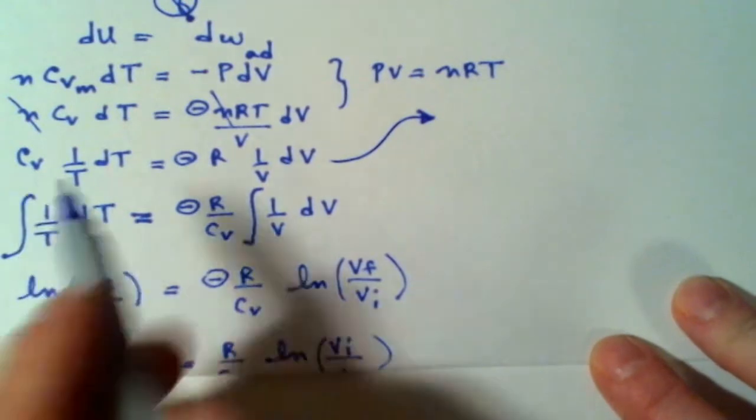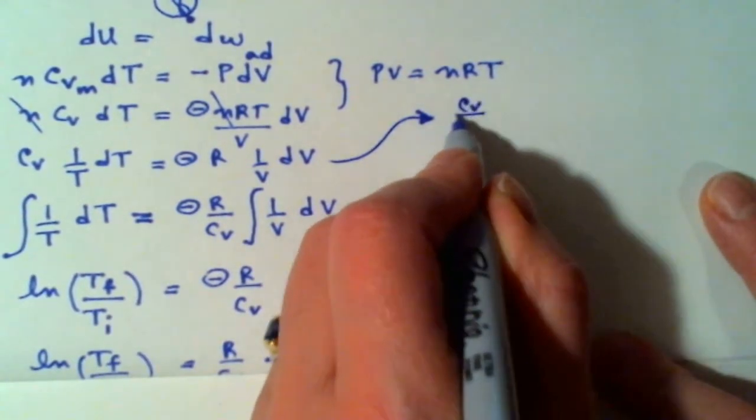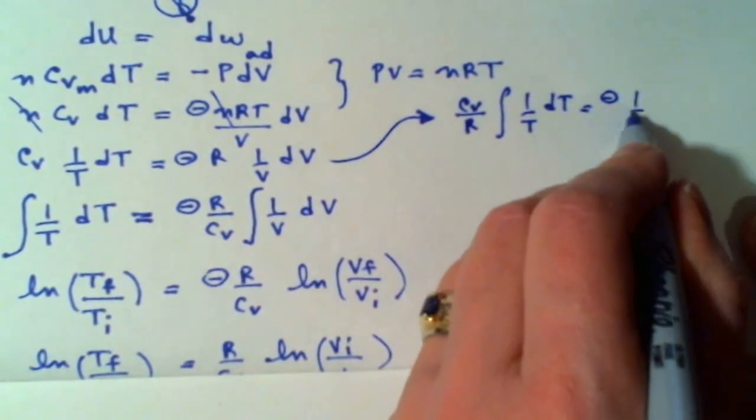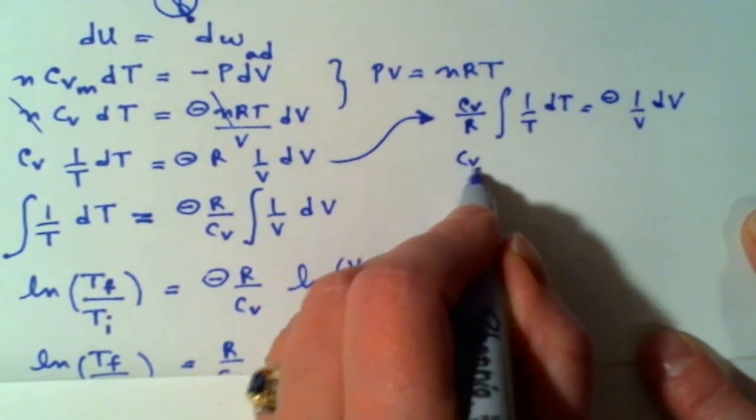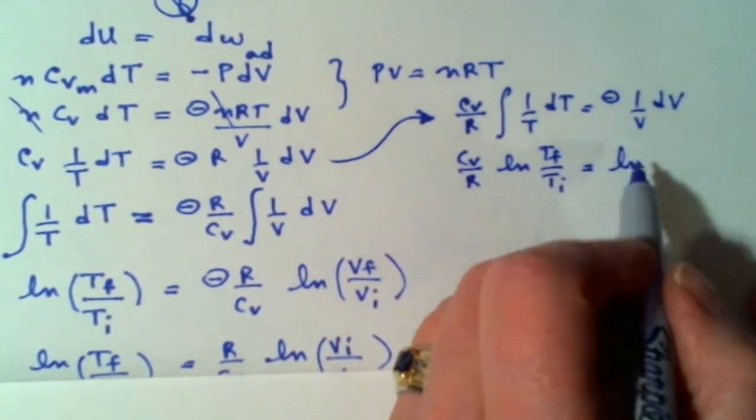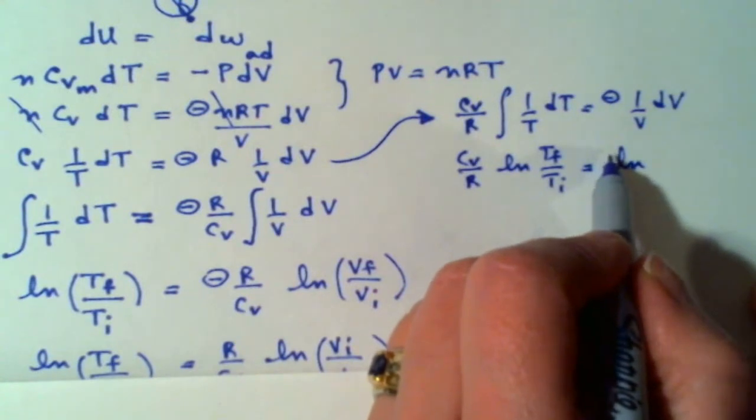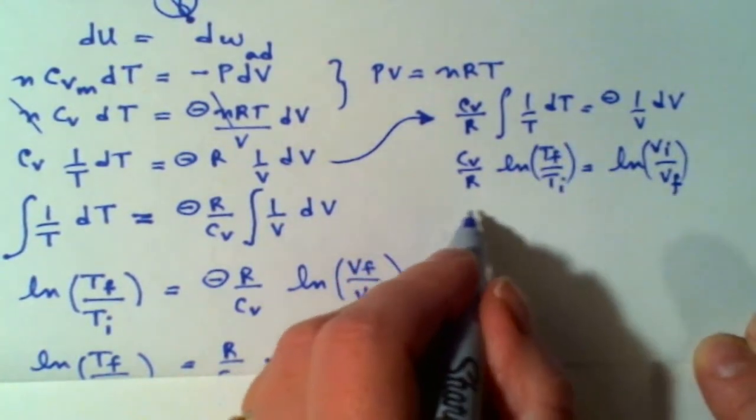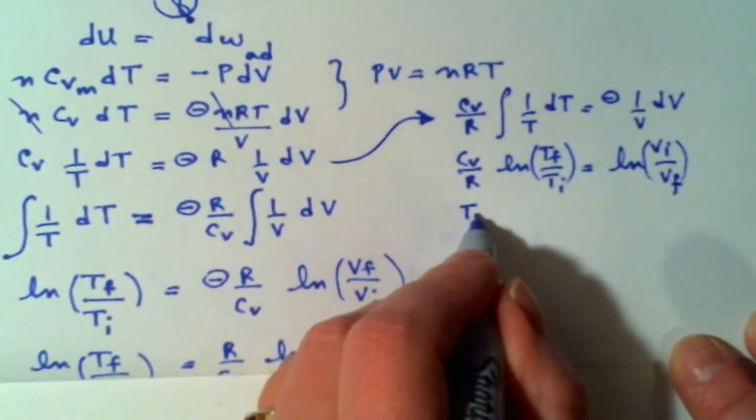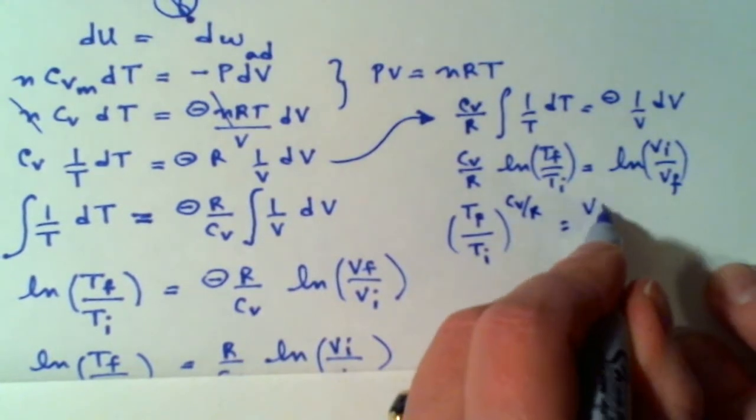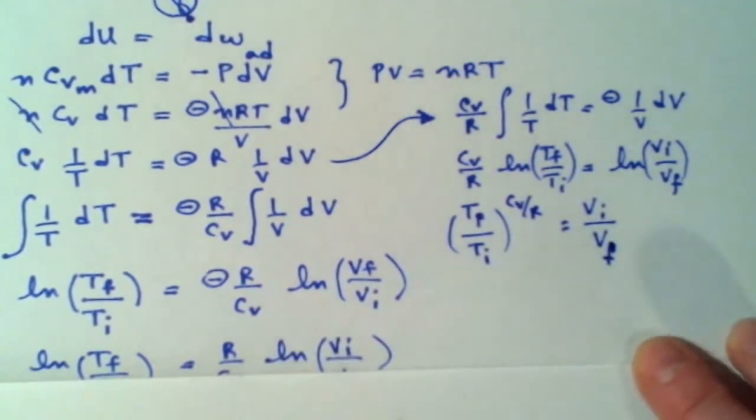And so that gives me cv over r integral 1 over t dt, and that is equal to minus 1 over v dv. So I end up with cv over r, ln t final over t initial, equals ln of, and it would be the negative ln, v final over v initial. But I'm going to take care of that negative, and that would become v initial over v final. And then I want to do the inverse ln, so I get t final over t initial raised to the power of cv over r is equal to v initial over v final. And so I can rearrange for v final in that formula.